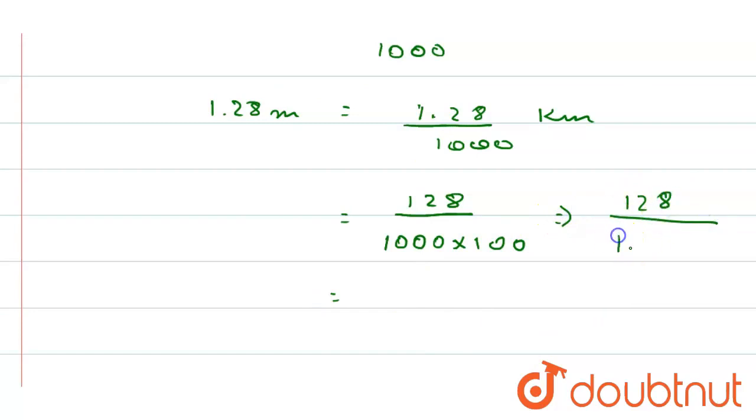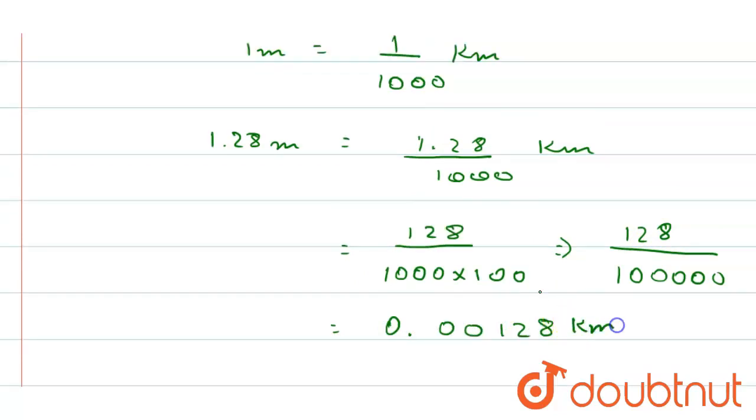128 by 1, 2, 3, 4, 5 - five zeros. As in the denominator there are five zeros, in the numerator we will count from the right side, from 8, and we count five digits. So our answer will be 0.00128 kilometers. This will be the answer for this question.